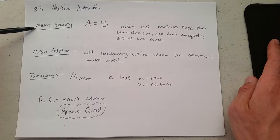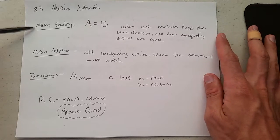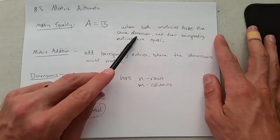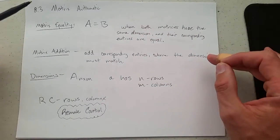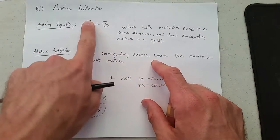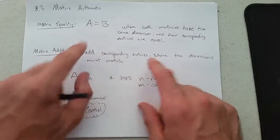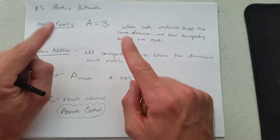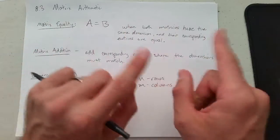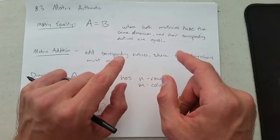So what does it mean for two matrices to be equal? Two matrices are equal exactly when they have the same dimension, so the same number of rows, same number of columns, and every single entry in A matches each entry in B. So if you're in row 1, column 1, your entries need to match. Whatever positions you're looking at, the entries need to be exactly the same.